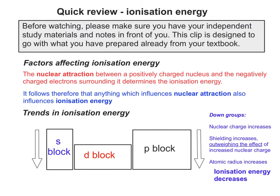If you go down groups, the nuclear charge increases, but the shielding also increases, and this actually outweighs the effect of the increased nuclear charge. The atomic radius obviously also increases, so therefore the ionisation energy — the energy required to remove an electron — goes down.